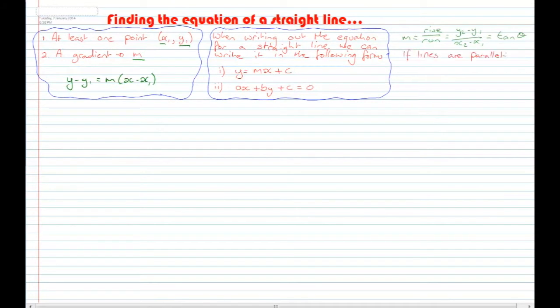The next thing is: if lines are parallel, they have the same gradient. And if lines are perpendicular, you can find the gradient by using the formula M2 = -1/M1. We'll come to this later. Alright, so let's have a look at our first worked example.